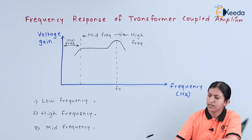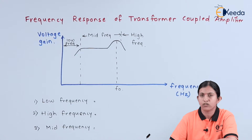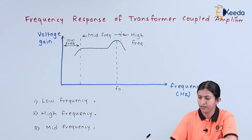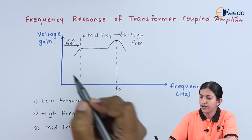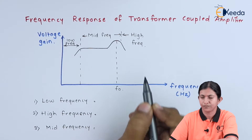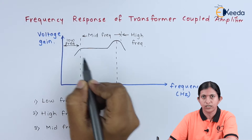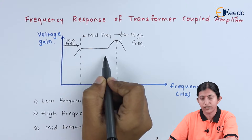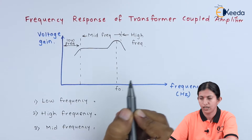This is the diagram of the frequency response of the transformer coupled amplifier. As we can see, it is divided into three regions: low frequency region, mid frequency region, and high frequency region.